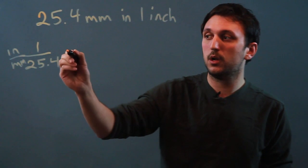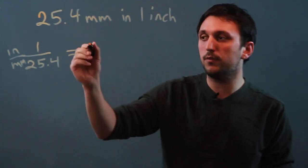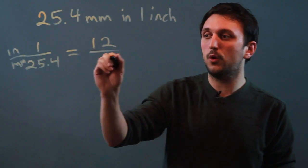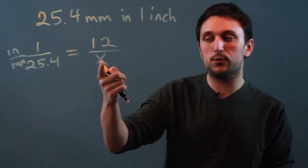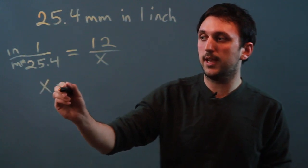So 1 over 25.4 equals however many inches. So let's say we're looking for 12 inches over x, and that's how many millimeters you want to find. So we say x times 1, which is x,